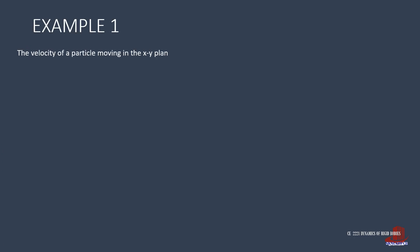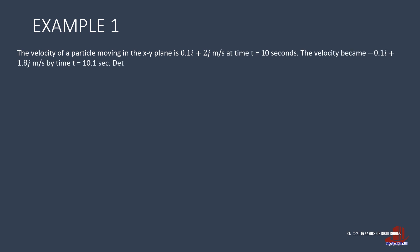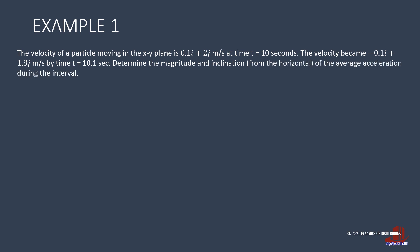The first problem has the velocity at 10 seconds in the form of 0.1i plus 2j. Then this velocity changed to negative 0.1i plus 1.8j after 0.1 second. We are to look for the magnitude and inclination of the average acceleration.